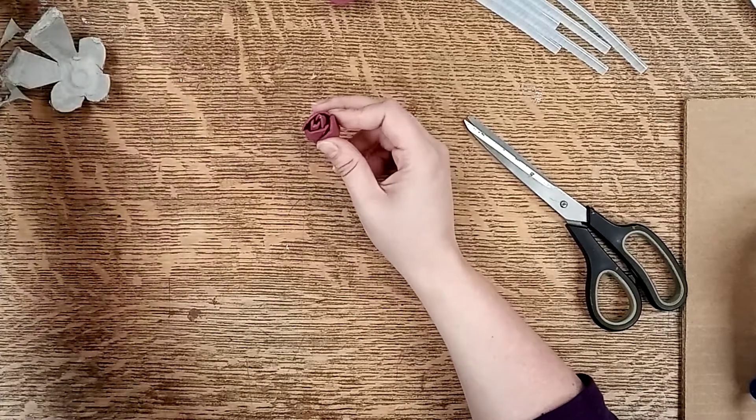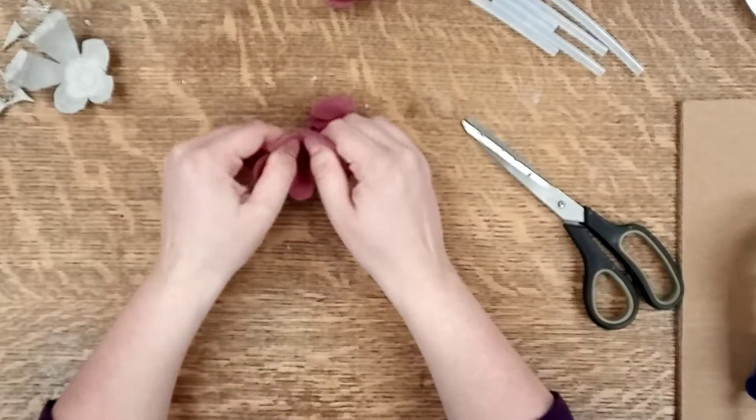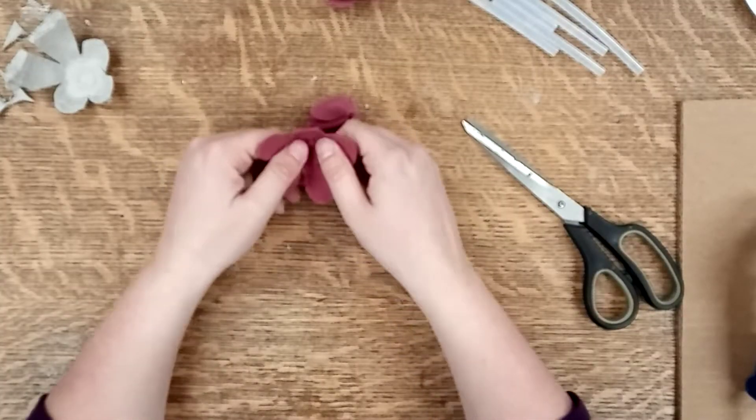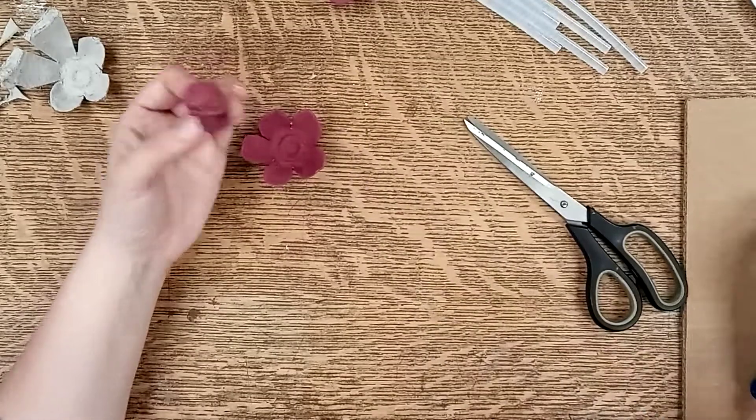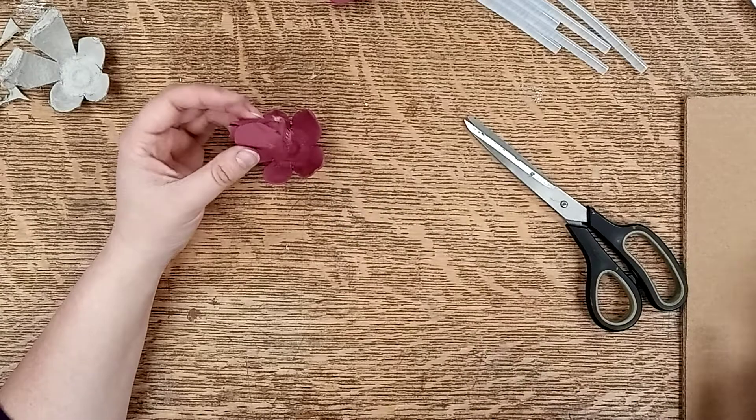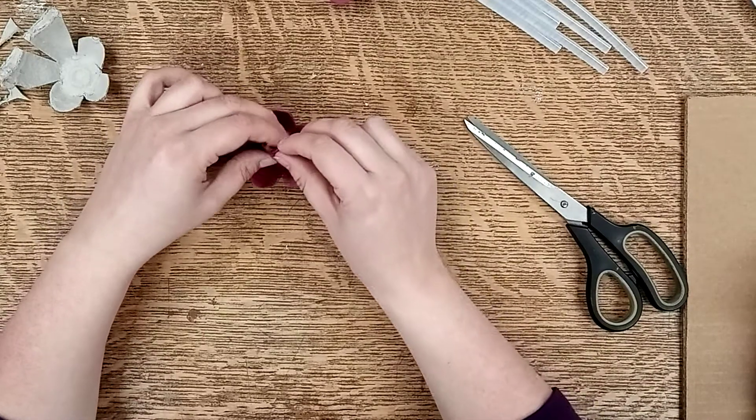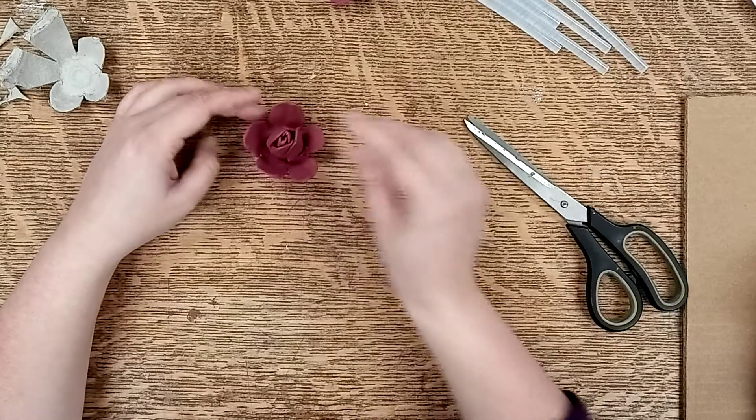So now we need another one of the cups and we're going to spread out the petals a little bit like so and we put a big glob of glue here on the bottom and you want to kind of alternate the petals and stick it right in the middle like this.